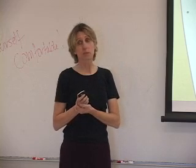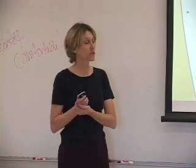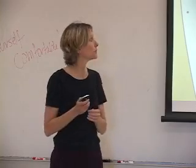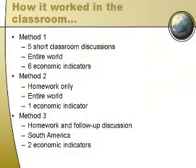The third method was the really successful one — over three-quarters of the class tested that they got it. I gave them both homework and a follow-up discussion, and I scaled it down: we dealt with one continent and two indicators. I asked them to compare gross domestic product, per capita GDP, and GDP growth. They did it as homework using an internet site that San Diego State put up with a map for me, and then we followed it up with a discussion.